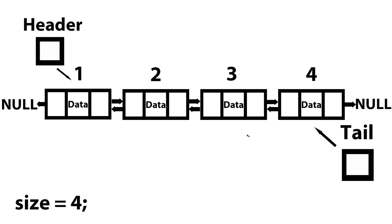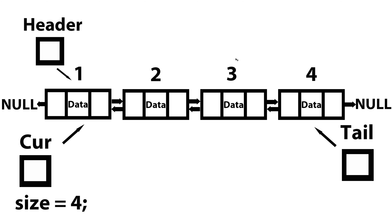Now let's move on to the last case: what happens if I want to remove a position that's greater than one but also less than the size — so position two or three, for example. I'm going to go with position three. The first thing I need to do is create a pointer that points to what header is pointing to. This is a temporary pointer we'll use to iterate through our doubly linked list until we reach position three. For our loop, we're going to start at position one using a for loop, and the loop is going to keep advancing our current pointer until we reach position three.